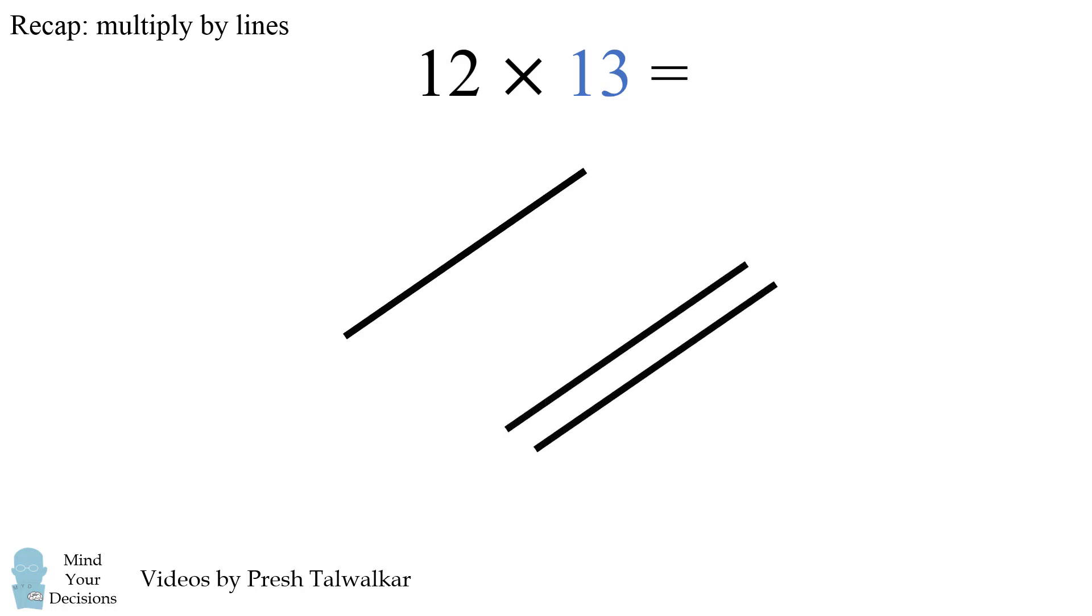For the other number, we'll draw lines in the other direction. For the 1 in 13, we'll draw one line, and then for the 3 in 13, we'll leave some space and then we'll draw three lines.